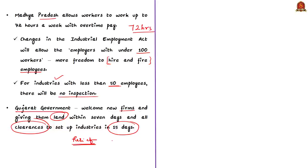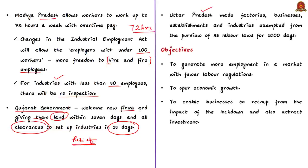The Uttar Pradesh government made factories, businesses, establishments, and industries exempted from the purview of about 38 labor laws for about 1,000 days. In Uttar Pradesh, only Section 5 of the Payment of Wages Act of 1934, the Construction of Workers Act of 1996, Compensation Act of 1993, and the Bonded Labor Act of 1976 remain functional. Now we will see why these changes are required and also the concerns expressed against them.